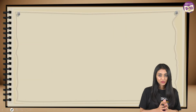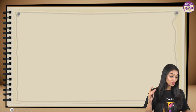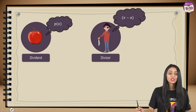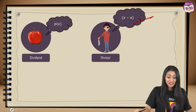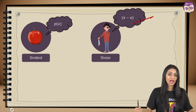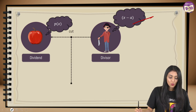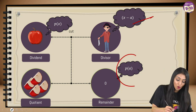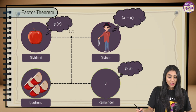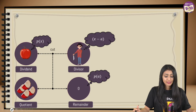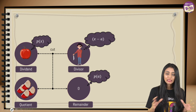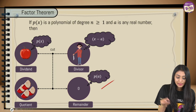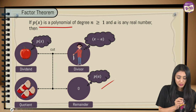Now let's learn about the factor theorem using the same animated characters. p(x) represents the apple, divided by x − a, the person with the knife. After cutting, we get the quotient as the fully cut apple and the remainder as 0, which denotes p(a) = 0. This means the apple is completely cut — in mathematical terms, the divisor is a factor of the dividend.